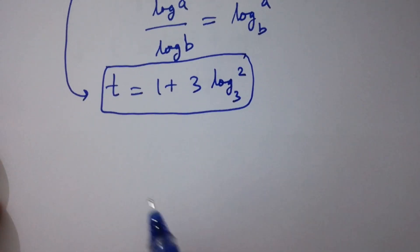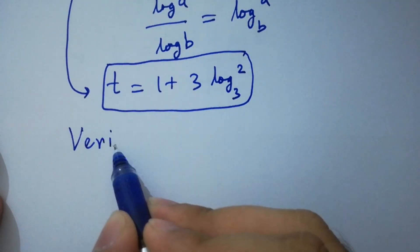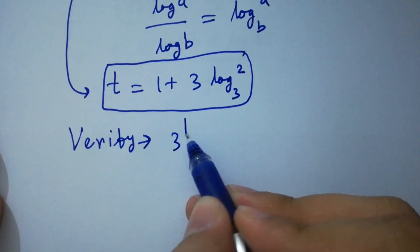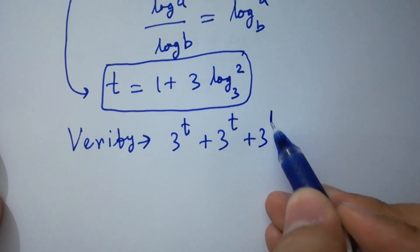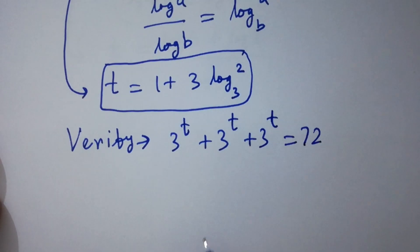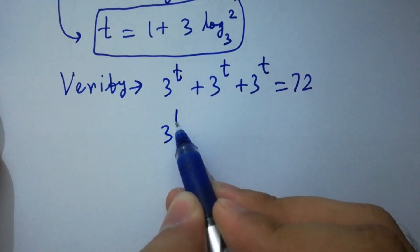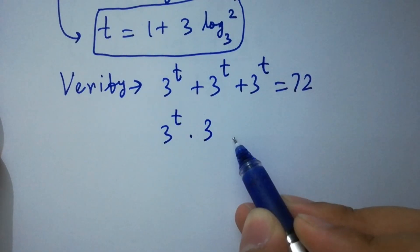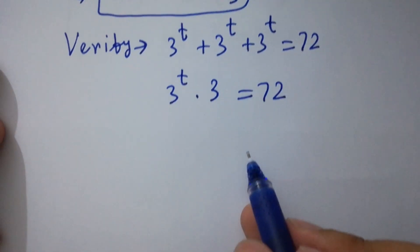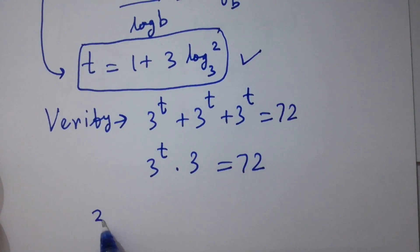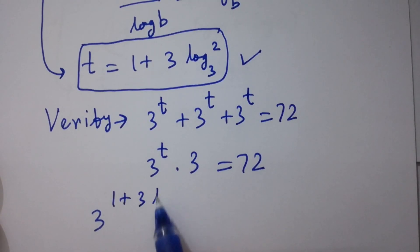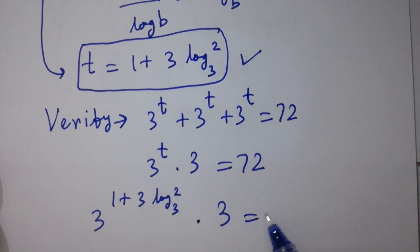That is our value of t. In the last step I am going to verify. We start with 3 to the power t plus 3 to the power t plus 3 to the power t equal to 72. Factoring, 3 to the power t times 3 equals 72. Now putting in the value of t: 3 to the power (1 plus 3 log 2 to the base 3) times 3 equals 72.